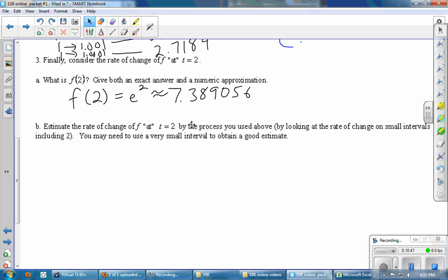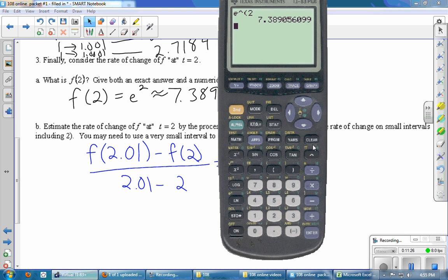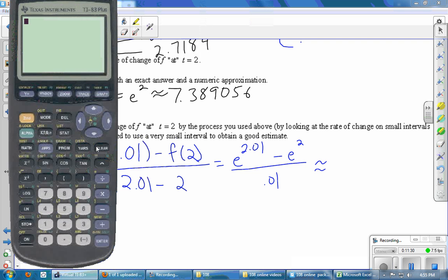We want to estimate the rate of change of f at t equals two, same process that we used above. So we'll write down one example, and then we'll use the calculator to zip through the calculations. For example, maybe we want to do f of 2.01 minus f of two, divided by 2.01 minus two. So this is e to the 2.01 minus e to the two divided by 0.01. So this is the kind of formula that we're looking for. And then we'll use the calculator to find some better estimates. Let's see if we need parentheses e to the 2.01 subtract e squared divided by 0.01. 7.426. That number doesn't look like anything to me.